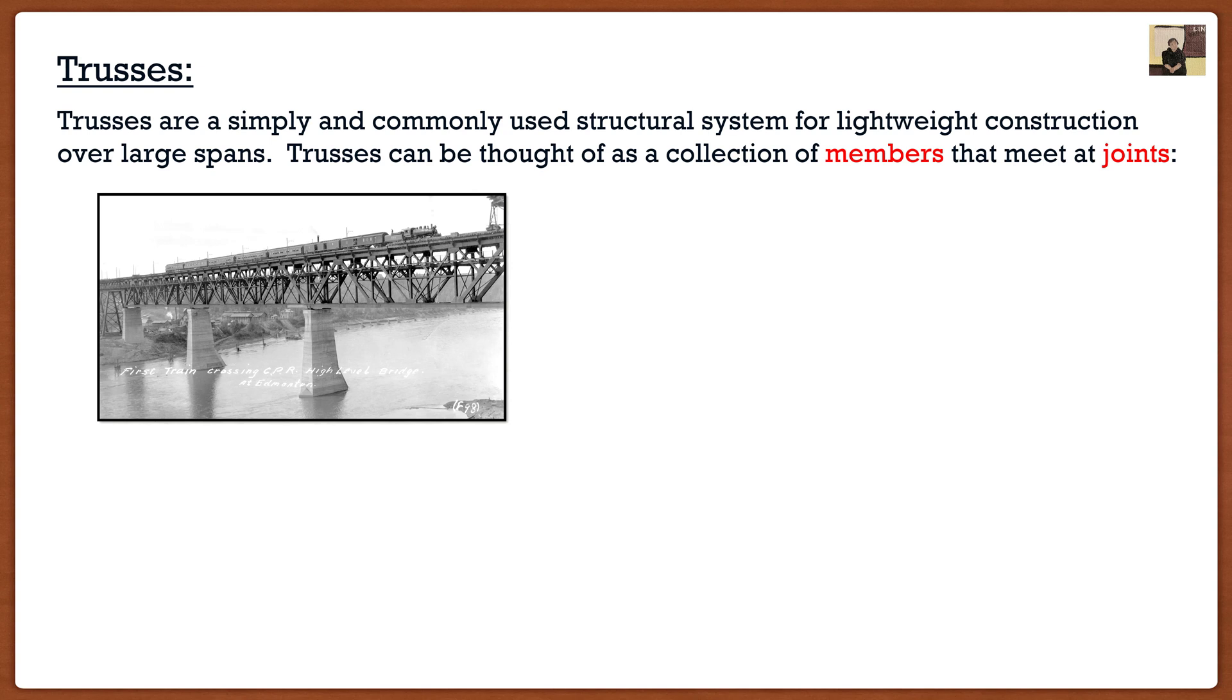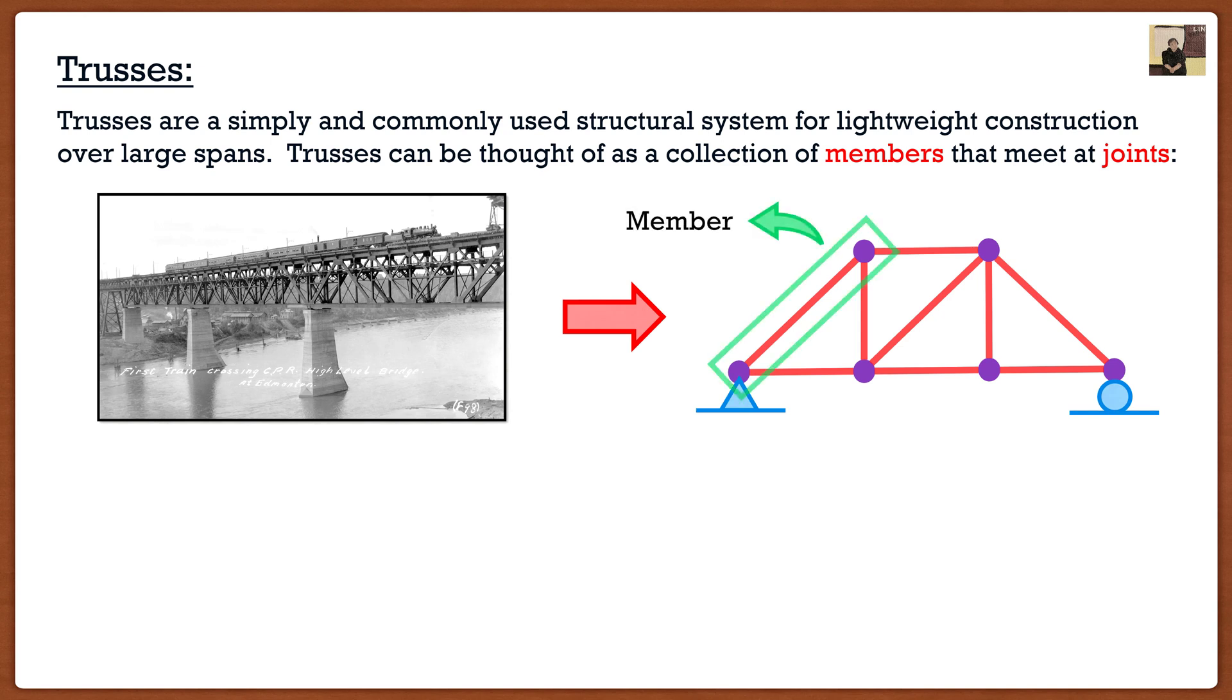Now these bridges as trusses are actually a collection of two things: members and joints. If I were to draw this in two dimensions, each truss consists of members, which are the long slender pieces that go between what we call the joints. In this particular picture here, the truss members would be those long pieces of steel and the joints would be those rivet connections where all the steel pieces connect.